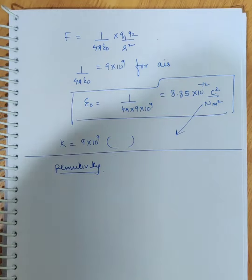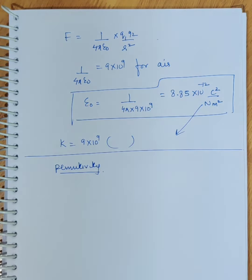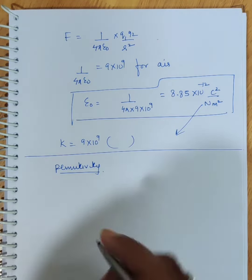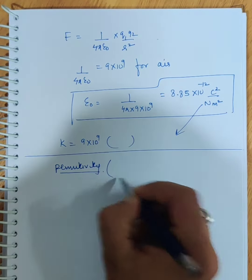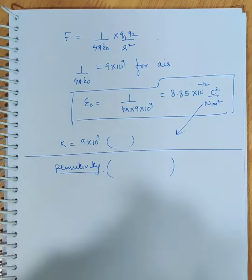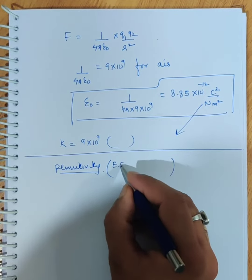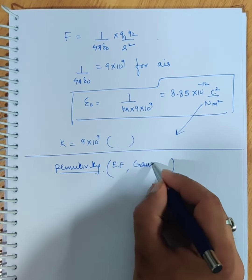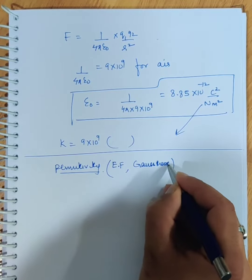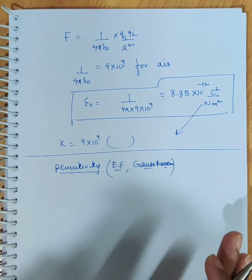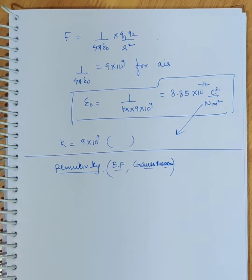We will explain this gradually because many things need to be told to you first. I'm giving you two hints about which topics you need to understand before I can explain it. I will have to explain electric field to you, and Gauss theorem to you. After explaining all these things, only then can I explain permittivity to you. Till then, consider it a property of the medium.